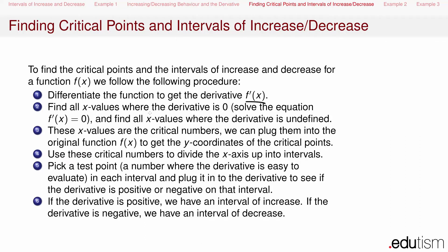Then we find all the x values where the derivative is 0 — basically set it equal to 0 and solve — and find all the x values where the derivative is undefined, basically find the domain of the derivative. Once we've found these x values, these x values are the critical numbers. We plug them into the original function to get the y coordinates of the critical points. If you don't have a y coordinate there, then it's not going to be a critical point — it's just a critical number without a corresponding critical point.